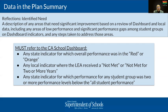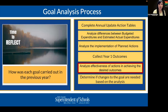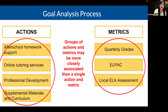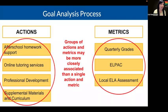The next step is to analyze effectiveness of actions in achieving the desired outcomes. It is not necessary to evaluate the effectiveness of each individual action separately. Instead, you can group actions together in a way that you have aligned them to achieve improvement in a given set of metrics. For example, with four actions — after school homework support, online tutoring, PD, and supplemental materials — those actions together are aimed at improving students' performance on the ELPAC, quarterly grades, and performance on a local ELA assessment. You can group actions this way as you analyze their effectiveness.